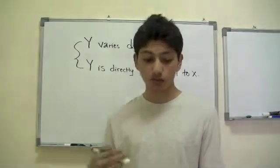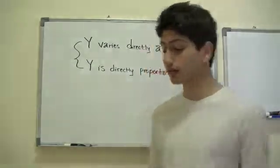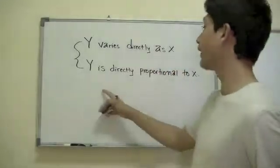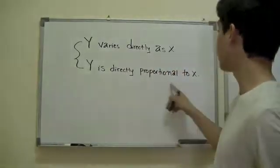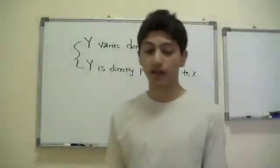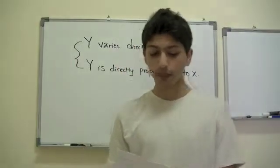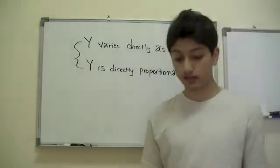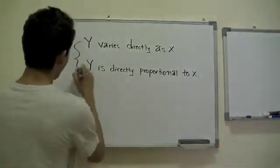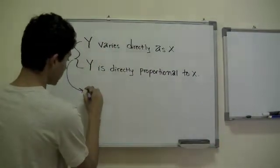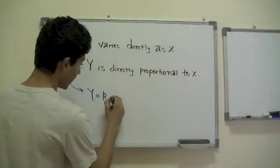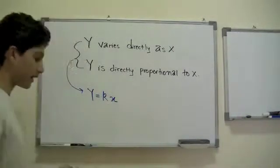This kind of problem emerges when word problems have phrases like: 'y varies directly as x' or 'y is directly proportional to x.' These two phrases mean exactly the same thing — that there exists some constant k such that y is equal to k times x.